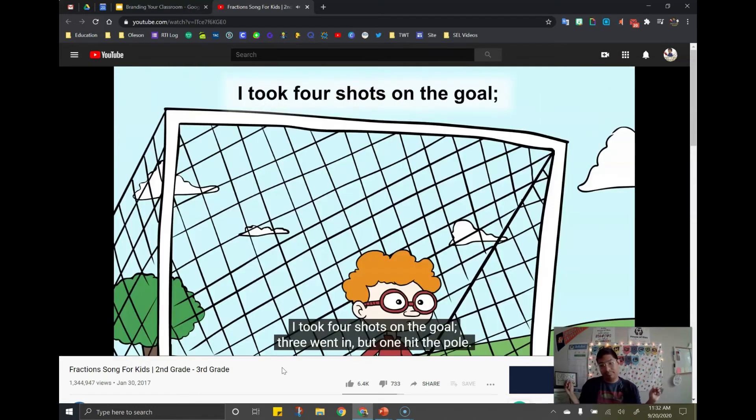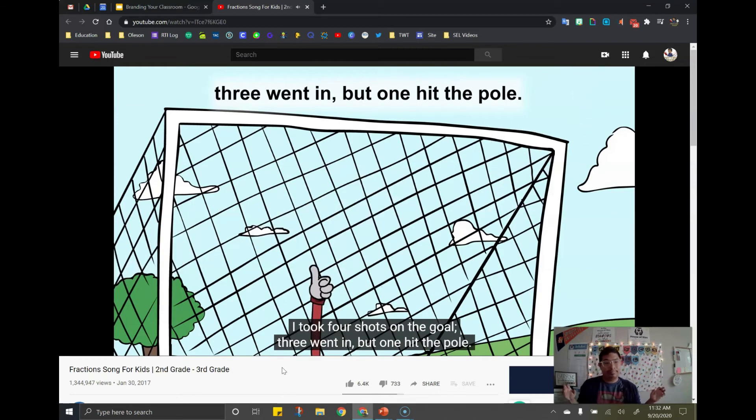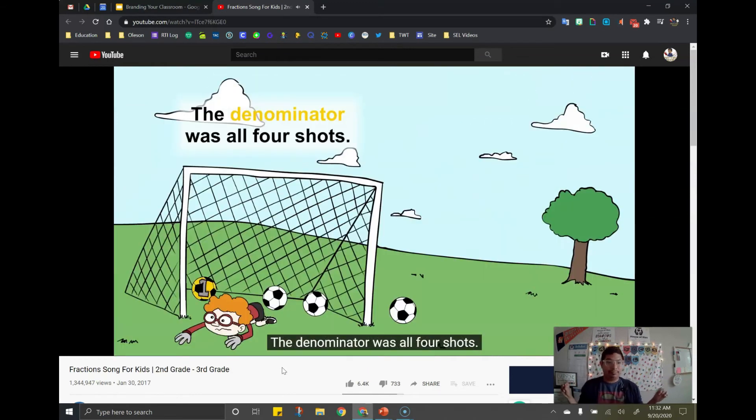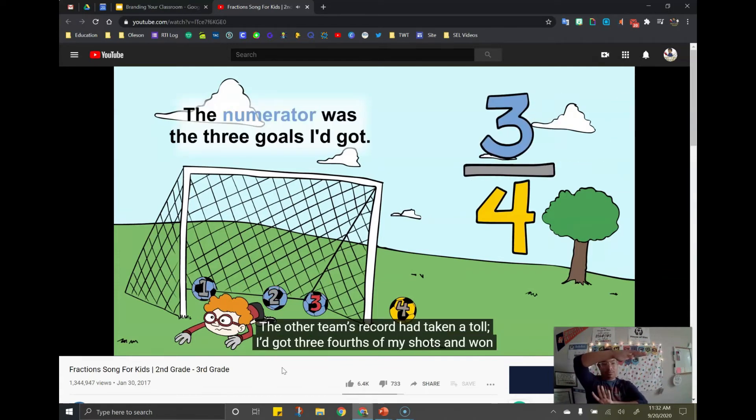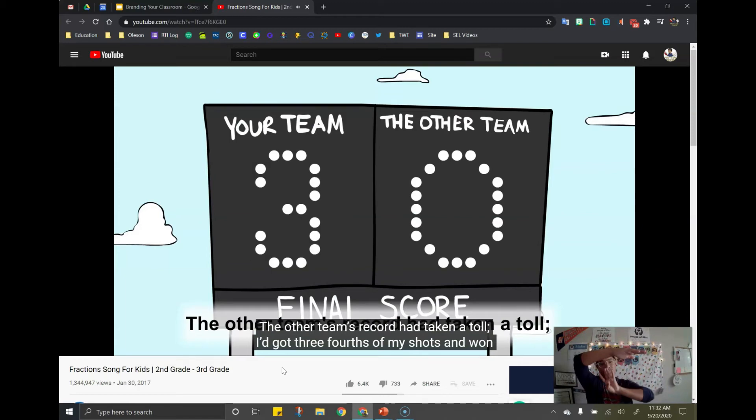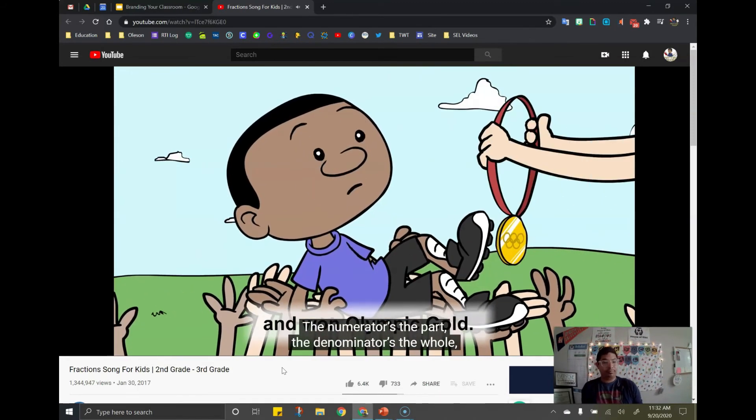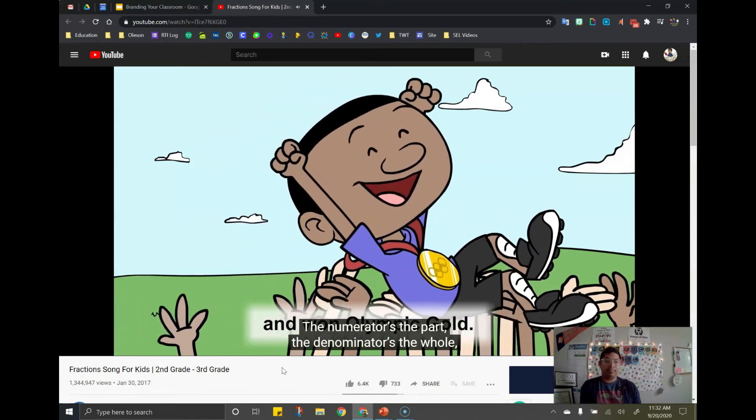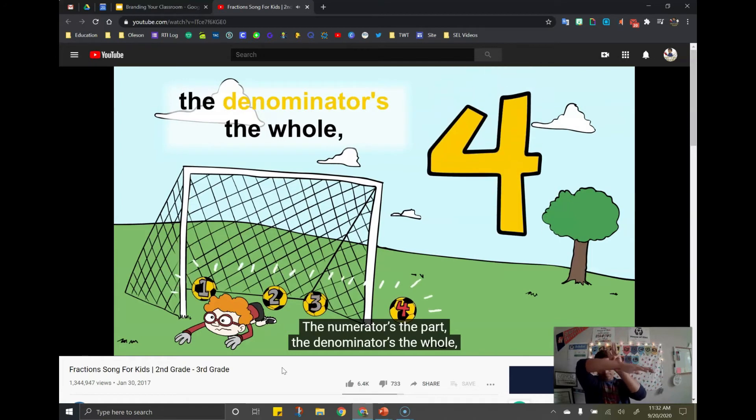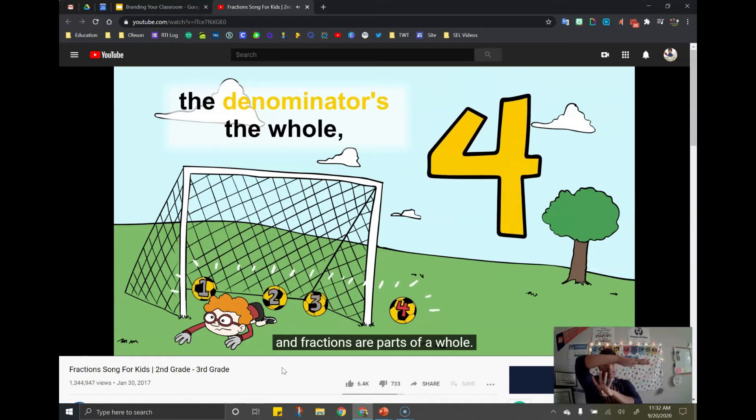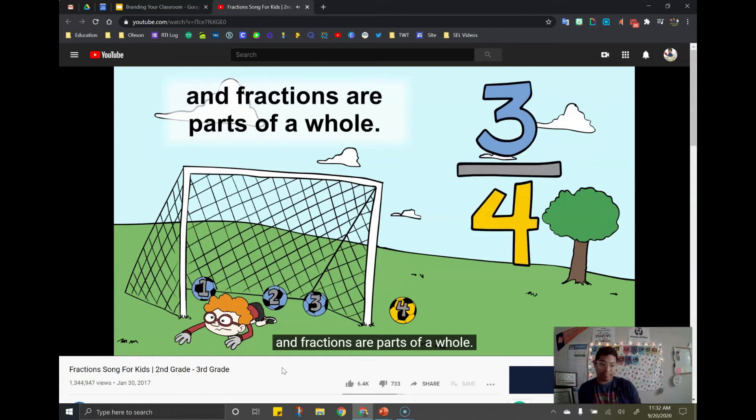I took four shots on the goal. Three went in, but one hit the pole. The denominator was all four shots. The numerator was the three goals I got. The other team's record had taken a toll. I got three-fourths of my shots, and one Olympic goal. The numerator's the part. The denominator's the whole. The fractions are parts of a whole.